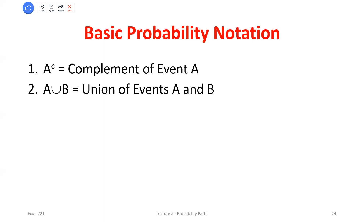The union of two events — written A ∪ B, which looks like a U — means 'A or B.' It's all the outcomes that are in event A or in event B. For our dice example, the union of A = {1, 2, 3} and B = {2, 4, 6} would include outcomes 1, 2, 3, 4, and 6 — all outcomes appearing in either event. We don't double-count 2 just because it appears in both; it's just one outcome.